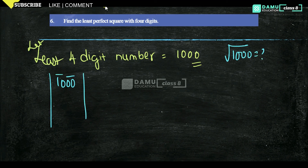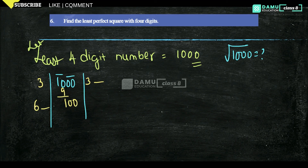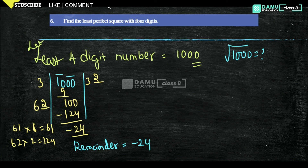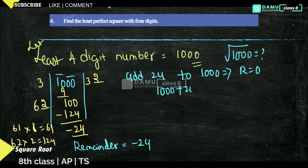Grouping 1000 as 10 and 00: the nearest perfect square below 10 is 9 (3²), so 3 goes in the quotient, remainder = 1, bring down 00 giving 100. Now 3 × 2 = 6, so we try 61 × 1 = 61, 62 × 2 = 124. We take 2, getting 124, and 100 − 124 is negative, so we use 62 × 2 = 124. The remainder is 100 − 124, which gives remainder 24. Since the remainder ≠ 0, 1000 is not a perfect square. We need to add 24 to 1000 to make the remainder 0.